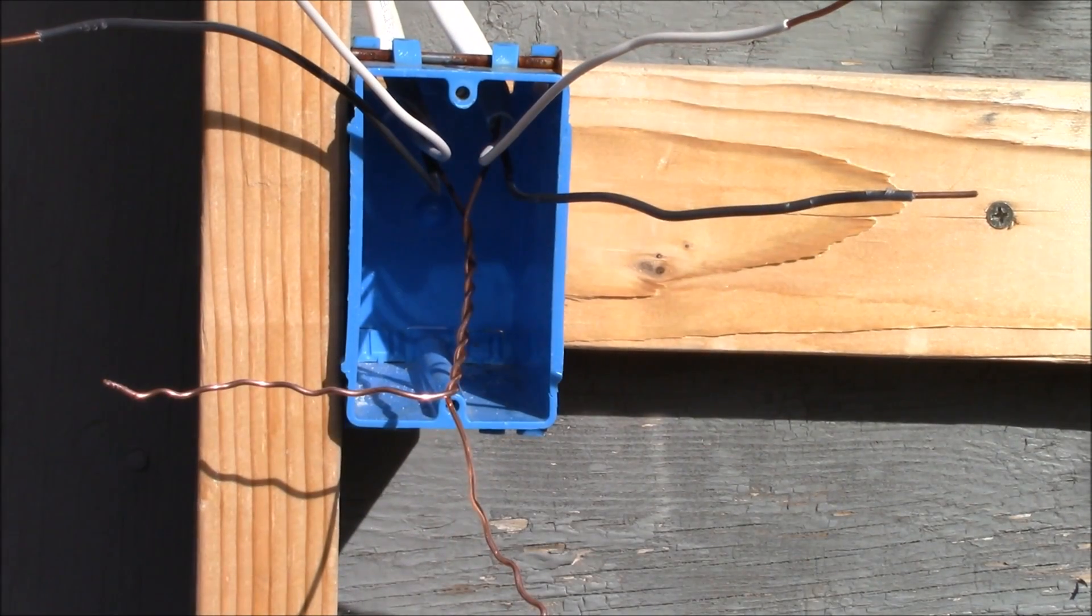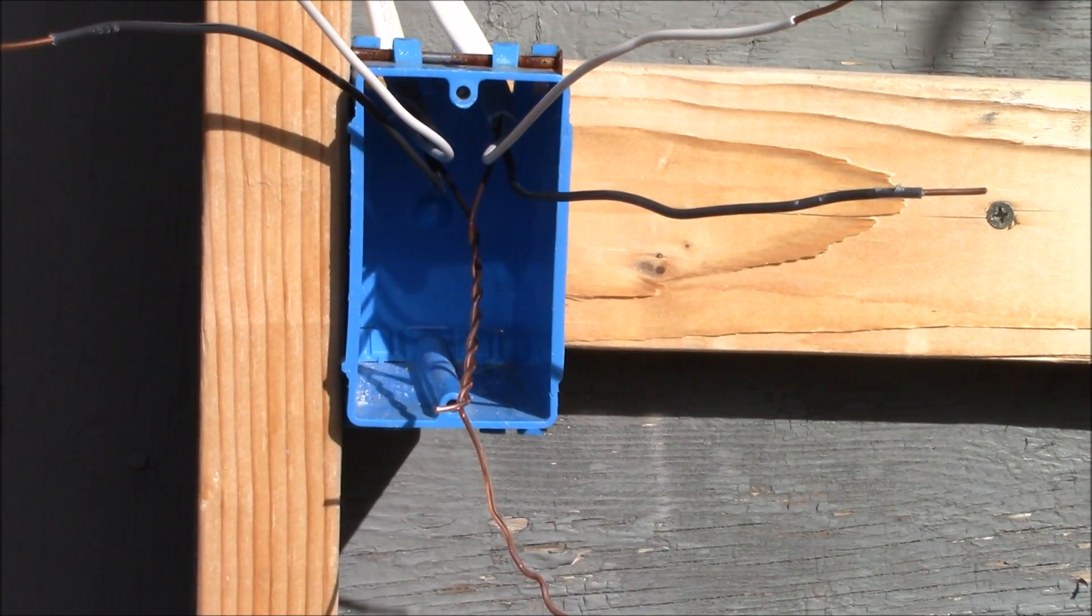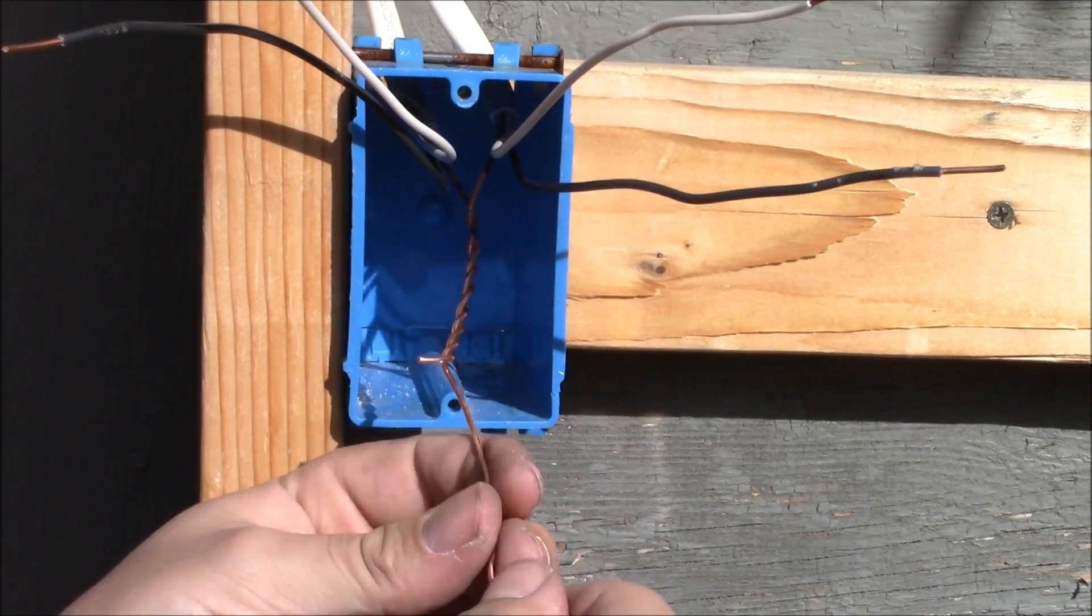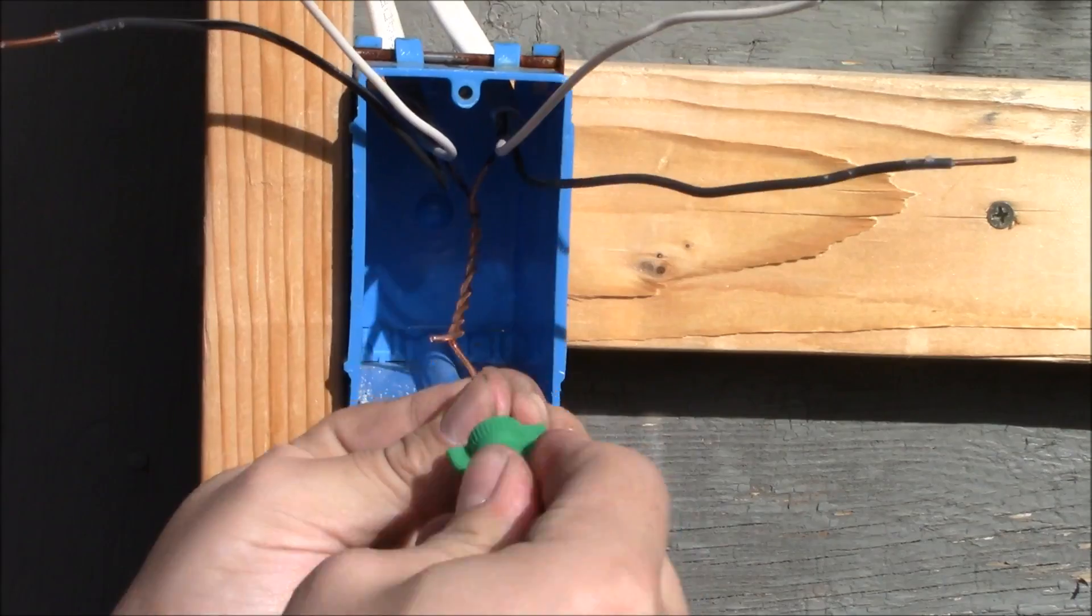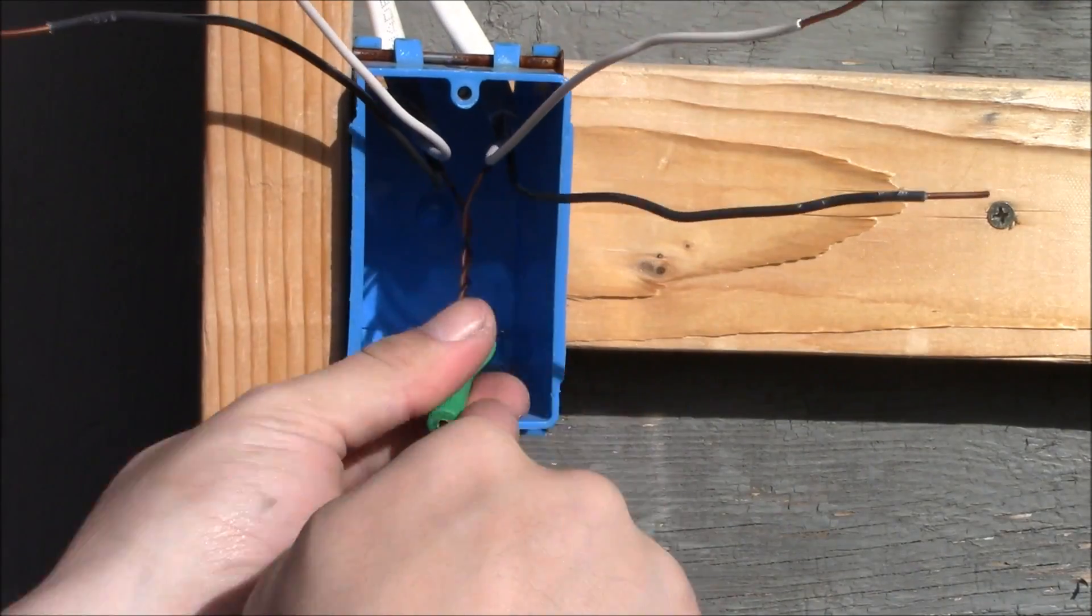The first thing I'm going to do is get these grounds together. We have a ground coming up here from the power cable and a ground from the cable that goes over to the light. I'm just going to twist these all together, splice them, and use a green wire nut.